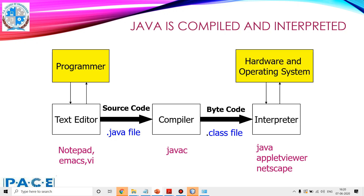The interpreter interacts with the hardware and the operating system and produces the output. So, to summarize: once we write the source code through the text editor, the .java file is compiled through the Java compiler javac, which produces the Java bytecode in the form of a .class file. That is interpreted by the Java virtual machine by invoking the java command, appletviewer, or a Java-enabled browser, depending on what kind of application it is.